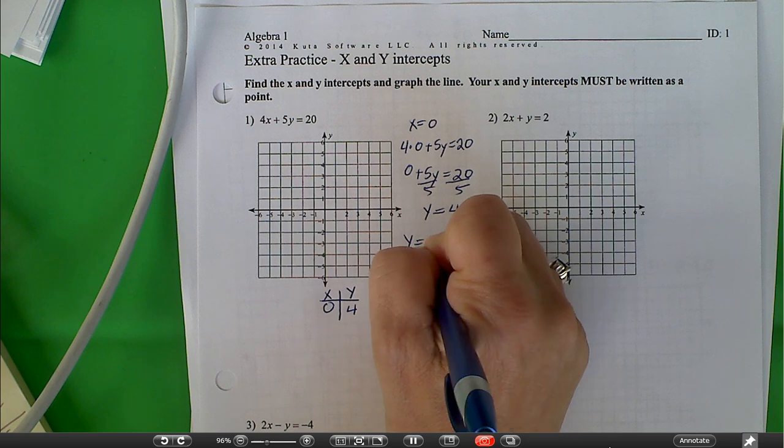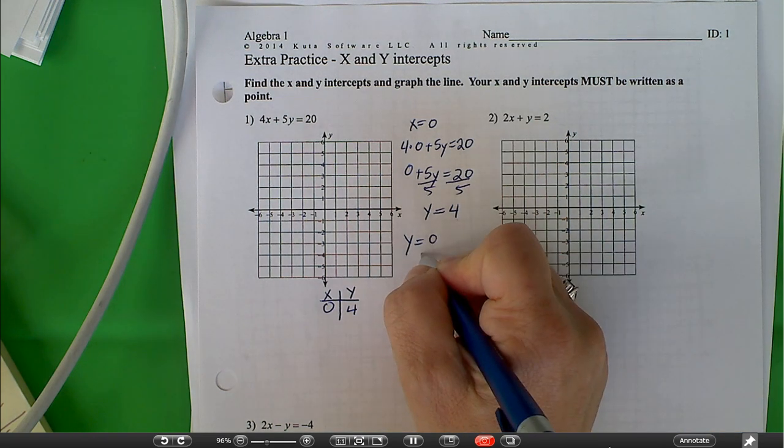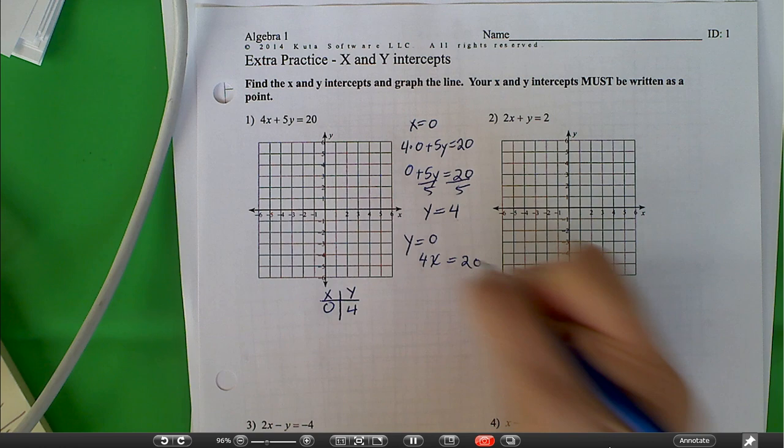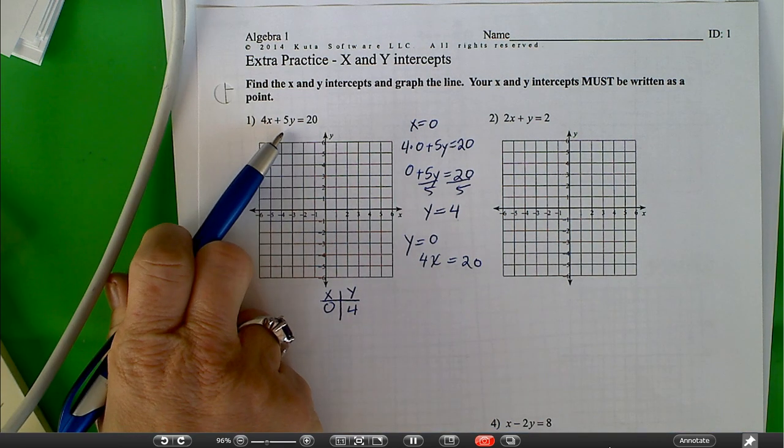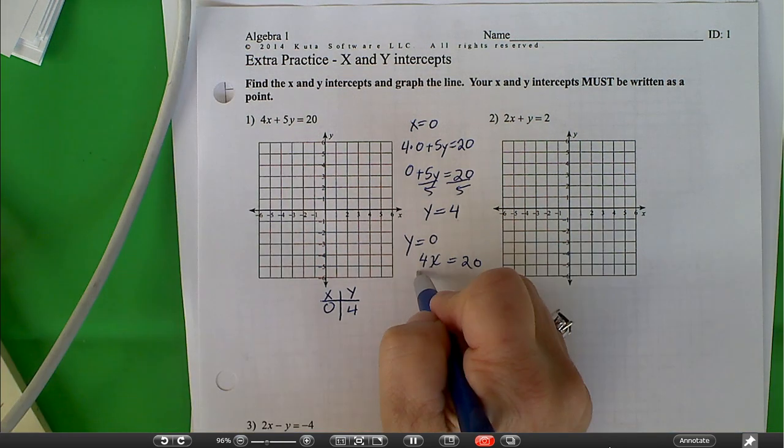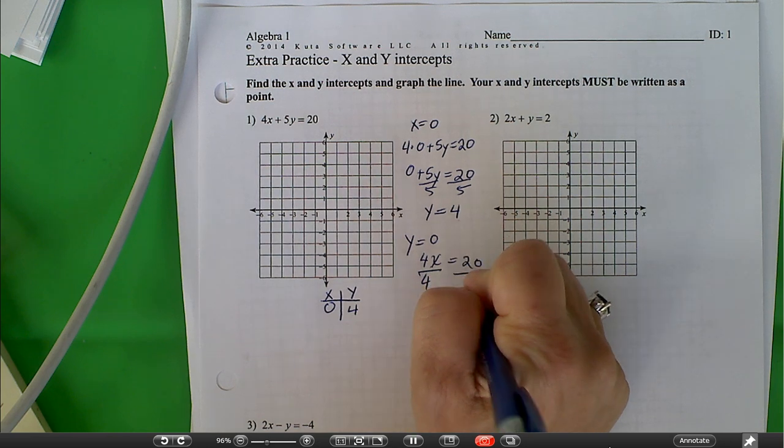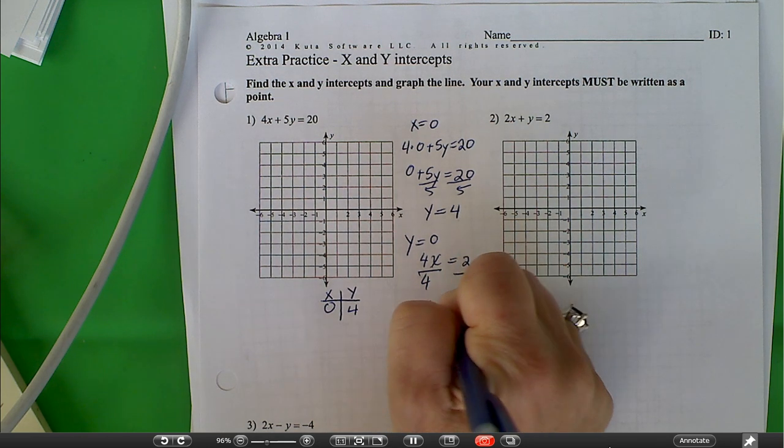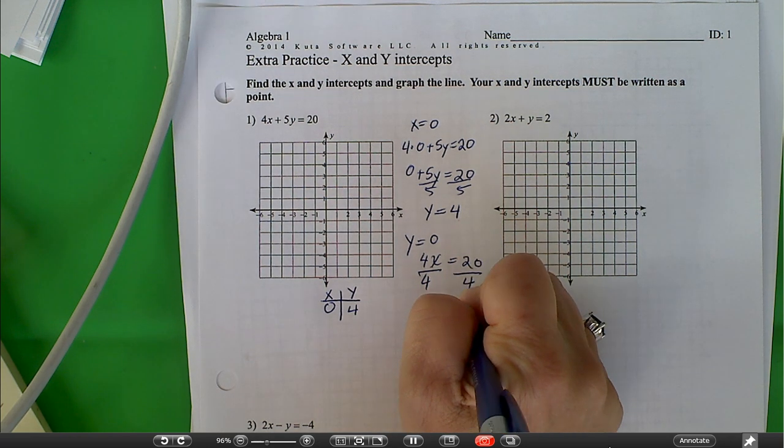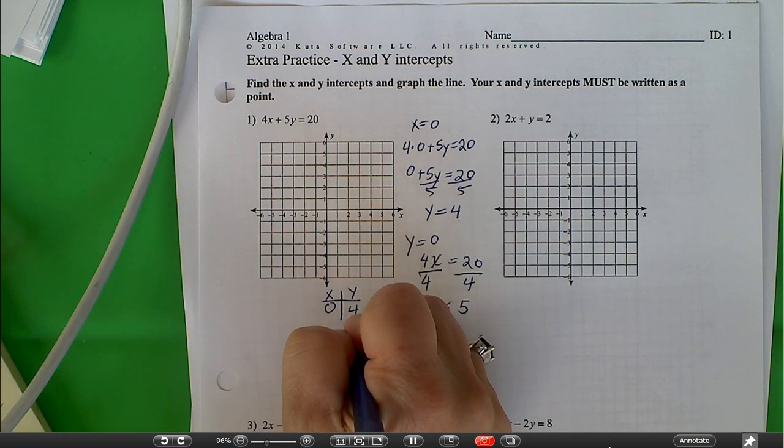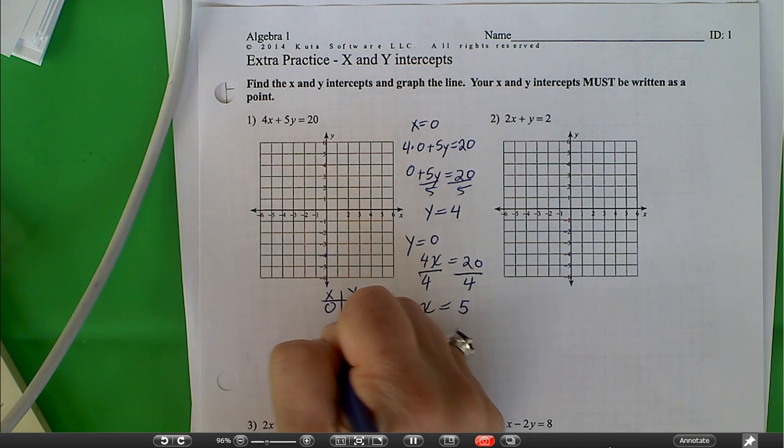What happens when y is equal to 0? We end up with 4x is equal to 20. Because 5 times 0 is equal to 0, we want to divide both sides by 4, and I get x is equal to 5. So now I have y is 0, x is 5.